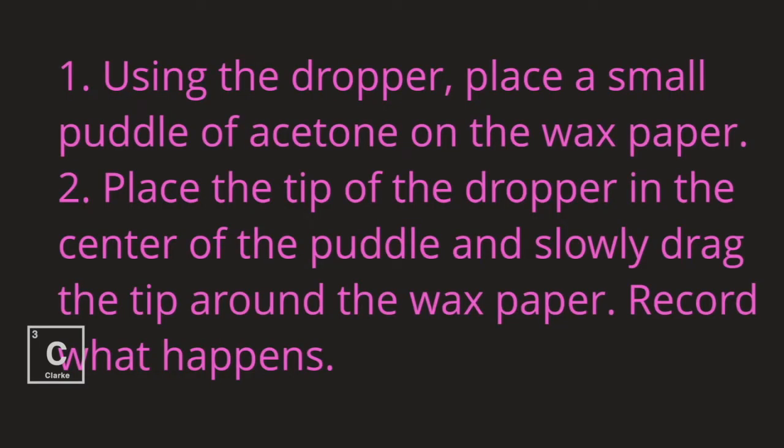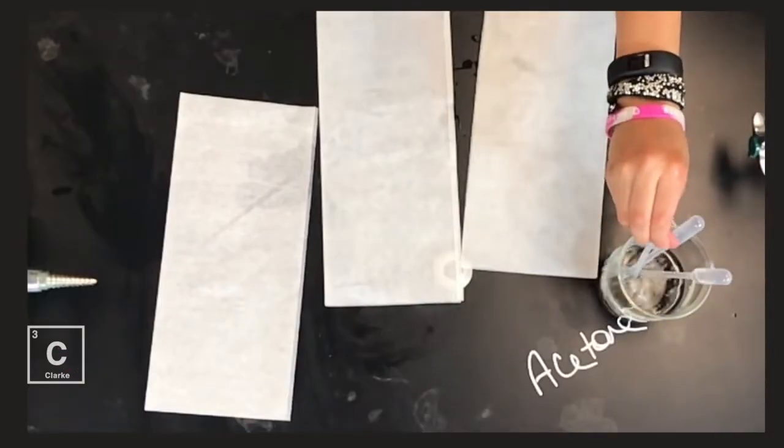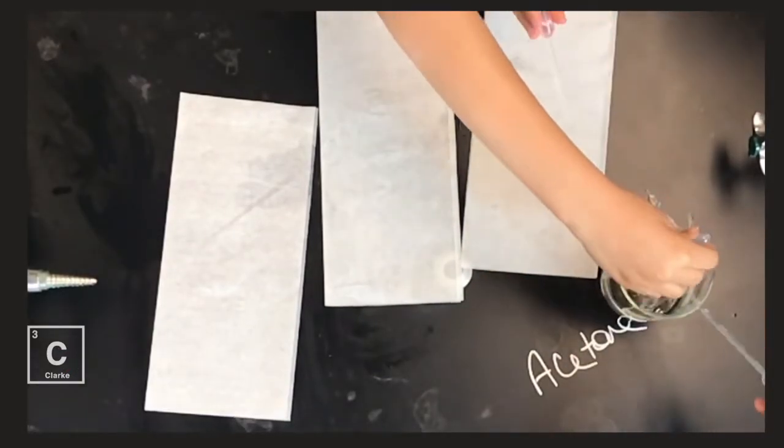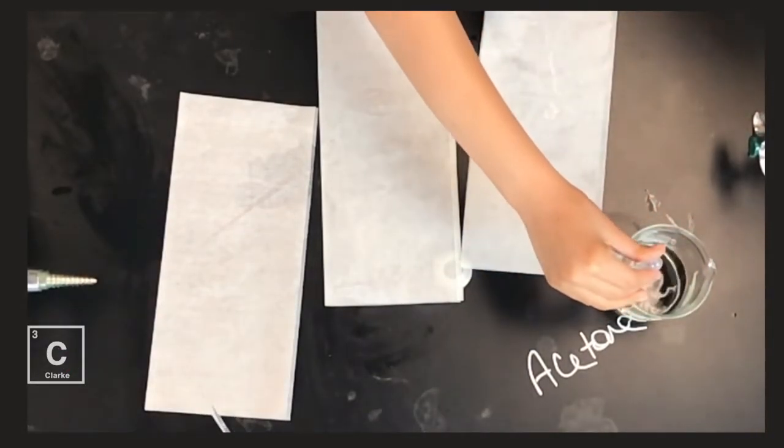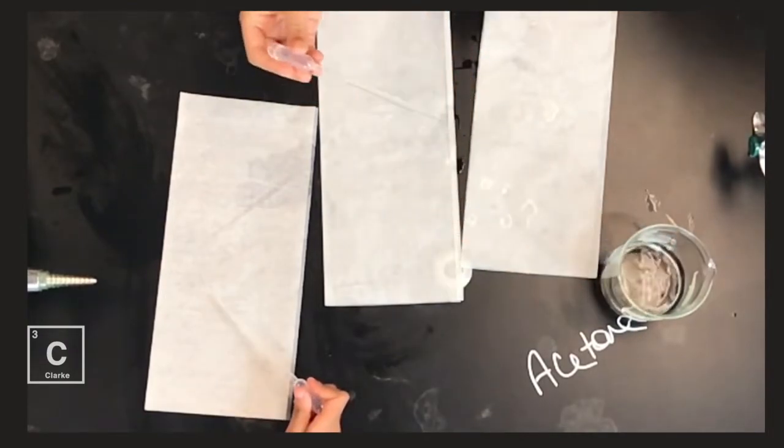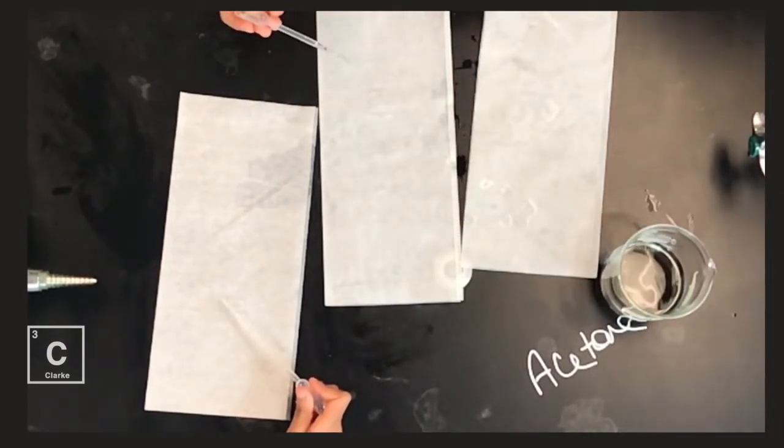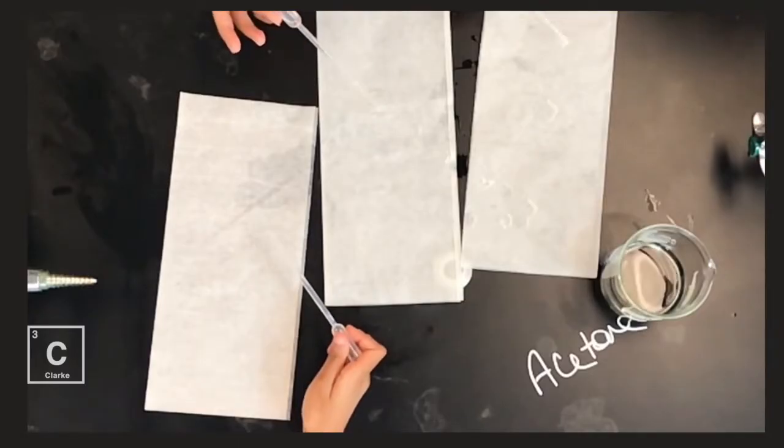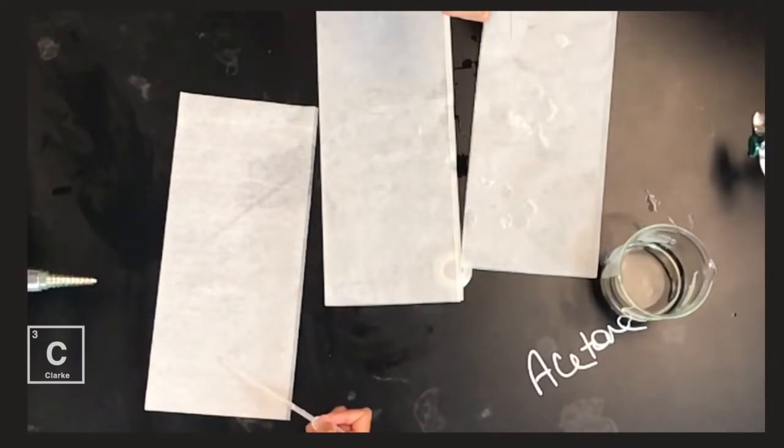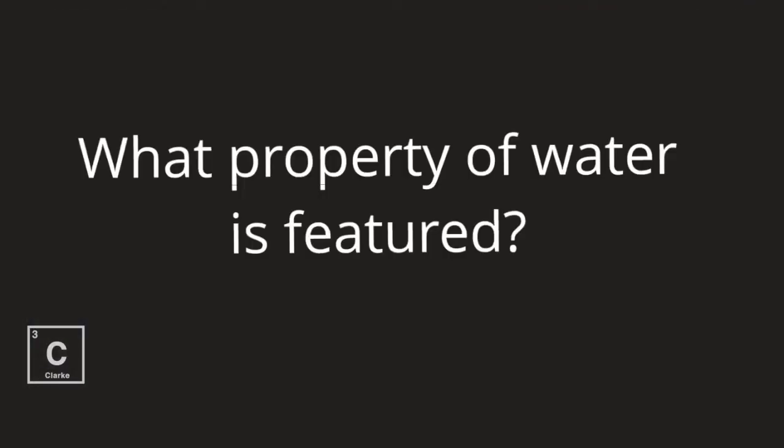Using the dropper, place a small puddle of acetone on the wax paper. Place the tip of the dropper in the center of the puddle and slowly drag the tip around the wax paper. Record what happens. Oh, it's not. That's sad. It just falls out! It's not making a bubble. What property of water is featured?